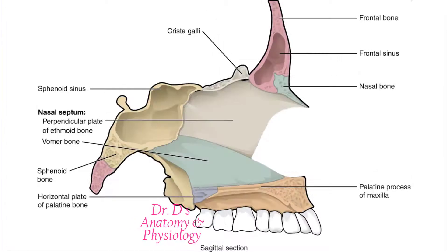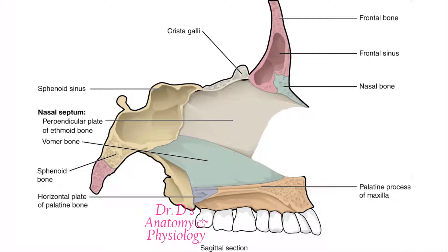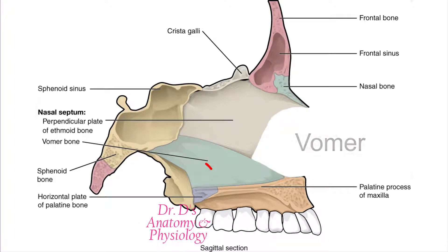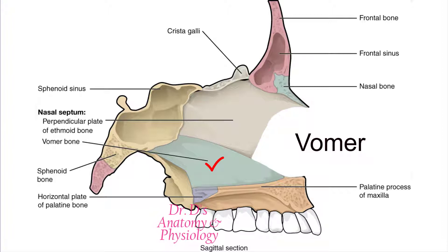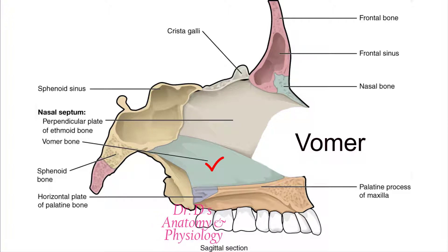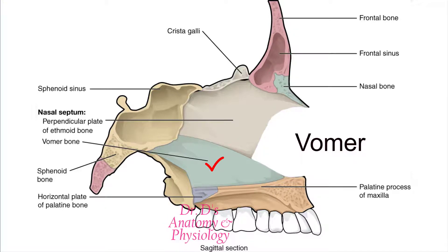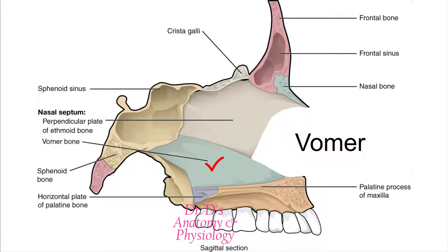The other bone that contributes to the nasal septum is called the vomer. This bone is an unpaired bone, like the ethmoid, and practically all it's doing is contributing to the lower part of the nasal septum.